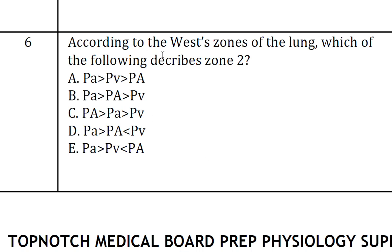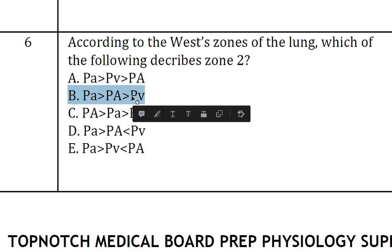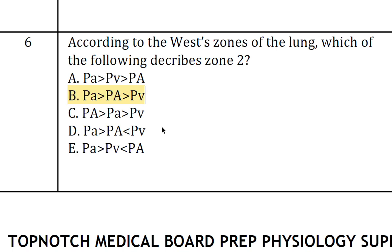The sixth question: according to the West zones of the lung, which of the following describes zone 2? The answer is B: PA greater than Pa greater than PB.